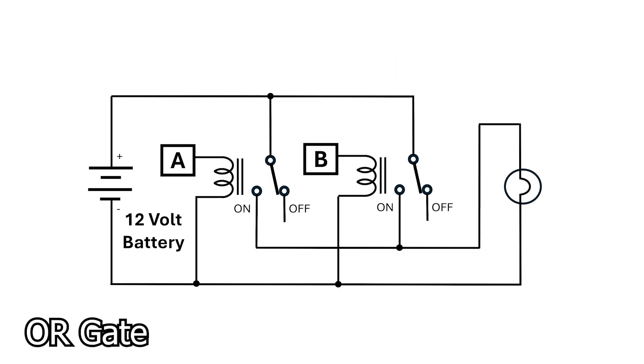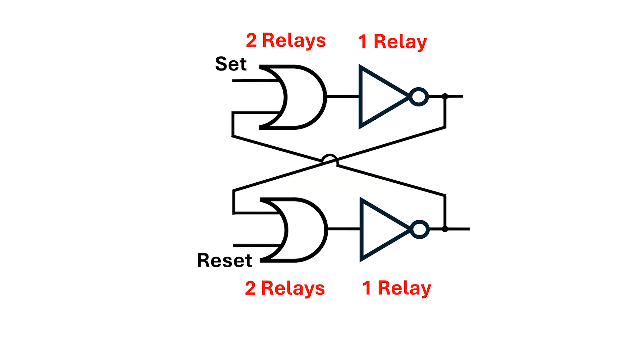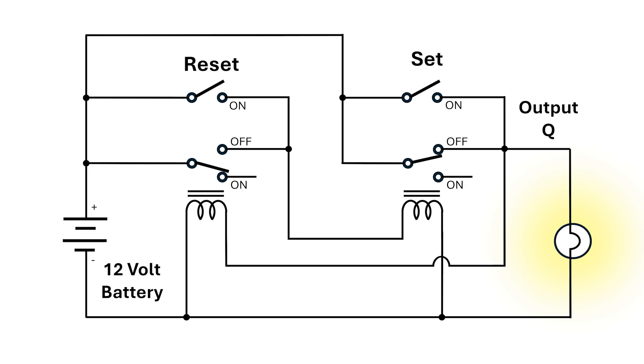Now we saw in the last video that the OR gate usually takes two relays, and the inverter takes one. So we should need six relays to make the SR latch, but I can do it with two. It's a little bit of a special case, but I'll explain why we only need two relays for the SR latch in the next video. But let's confirm that it actually works.